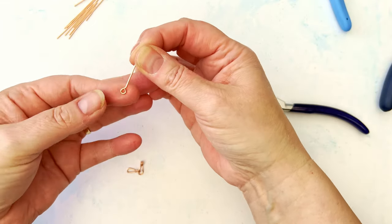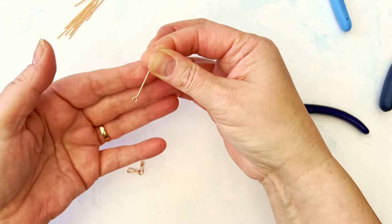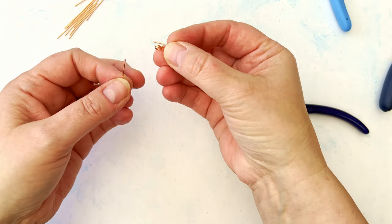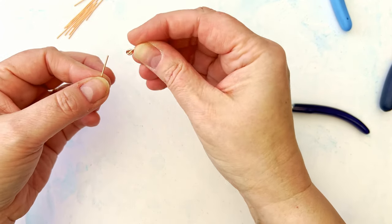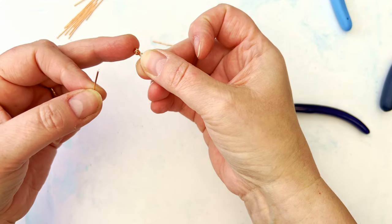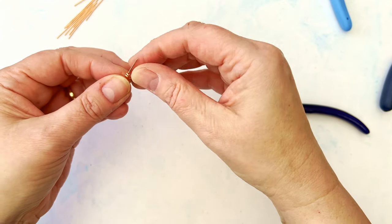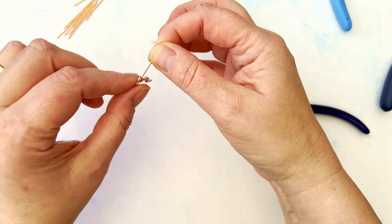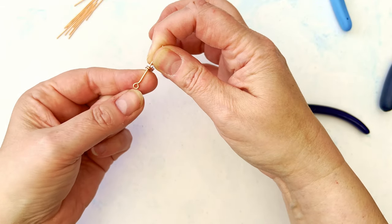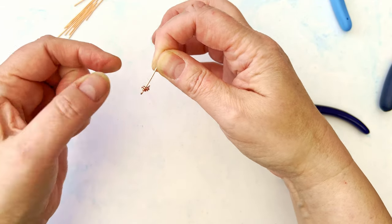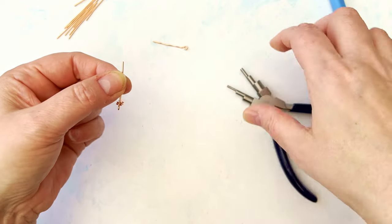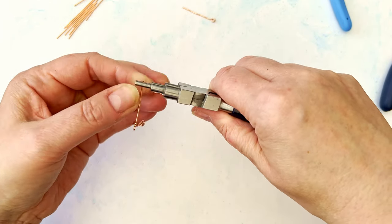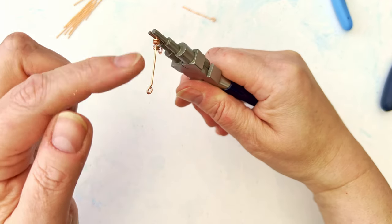You take your little eye pin, essentially that's what you've made. And then with the next link, put the two smaller hoops over this pin part here and again, that way. Use your first step so that the openings of these loops are in opposite directions.